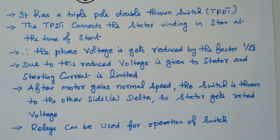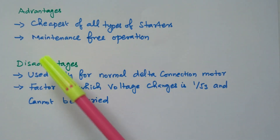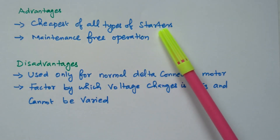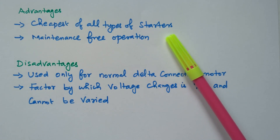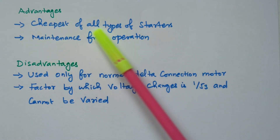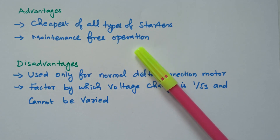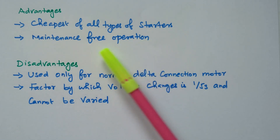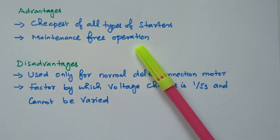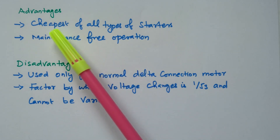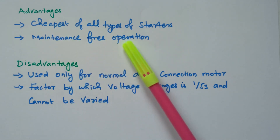Now we will see the advantages and disadvantages of this method. The advantage is it is the cheapest of all types of starters — we only have one switch, connecting in star connection and thereafter delta connection. No additional equipment is needed, so it is the cheapest method. Also, it offers maintenance-free operation, as there are no other parameters or equipment involved — only the changeover switch — so maintenance is also free.